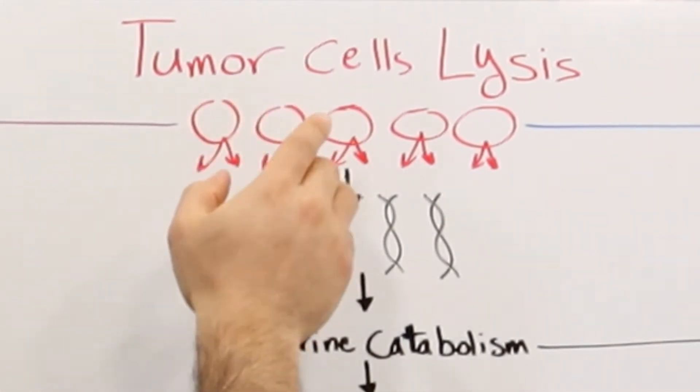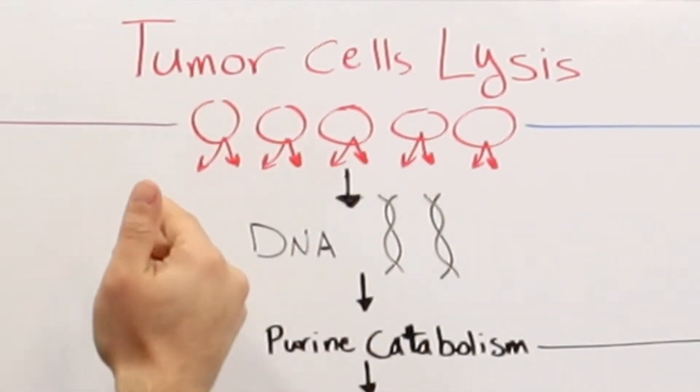This tumor lysis syndrome doesn't happen with every type of cancer. It happens with those who have high numbers of cancer cells or large size of cancer cells. What happens is that the cells release their components into the surrounding tissue and into the bloodstream.